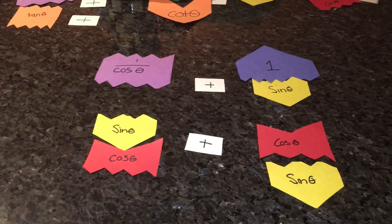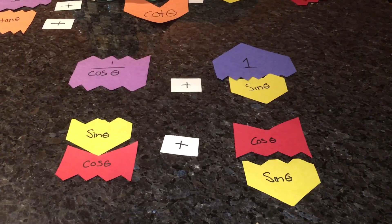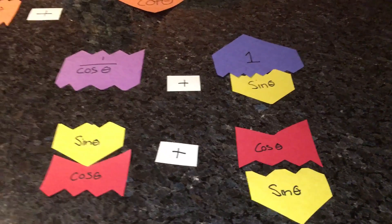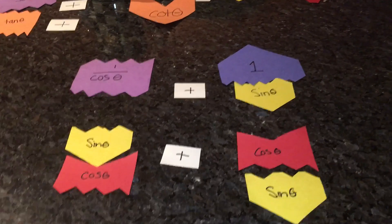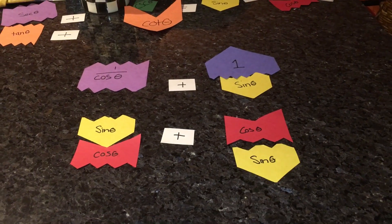Our next step is to add. In order to add these two, we have to have a common denominator. The common denominator for the numerator will be sine times cosine. And when we have a common denominator, we have to add,